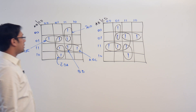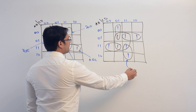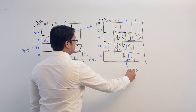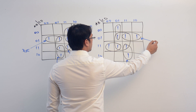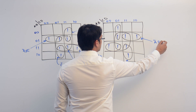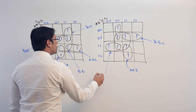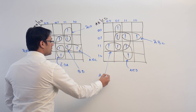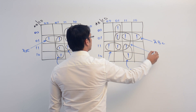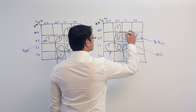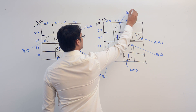In the same way, in the second K-map, this subcube is representing C, D, A. This is representing A complement, B, C. This is representing A, B, C complement. This biggest one is representing B, D. This one is representing C complement, D, A complement.